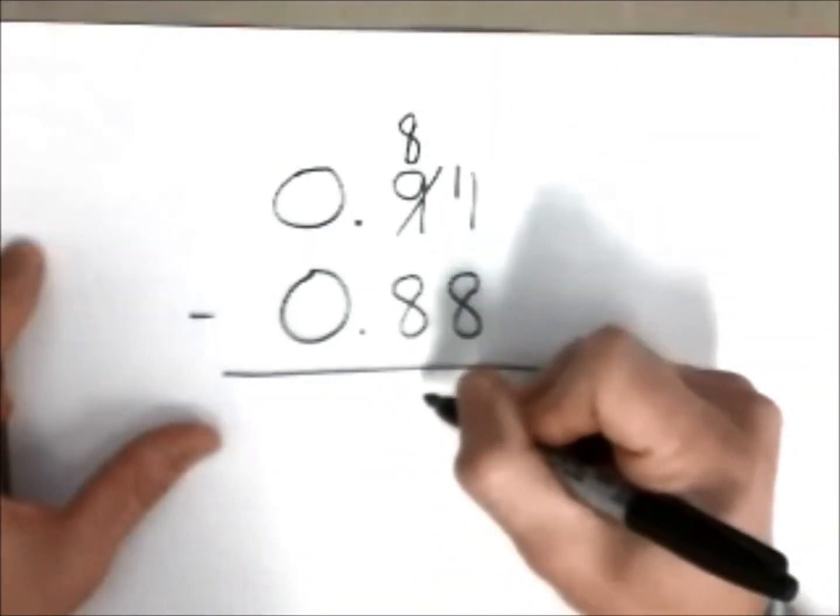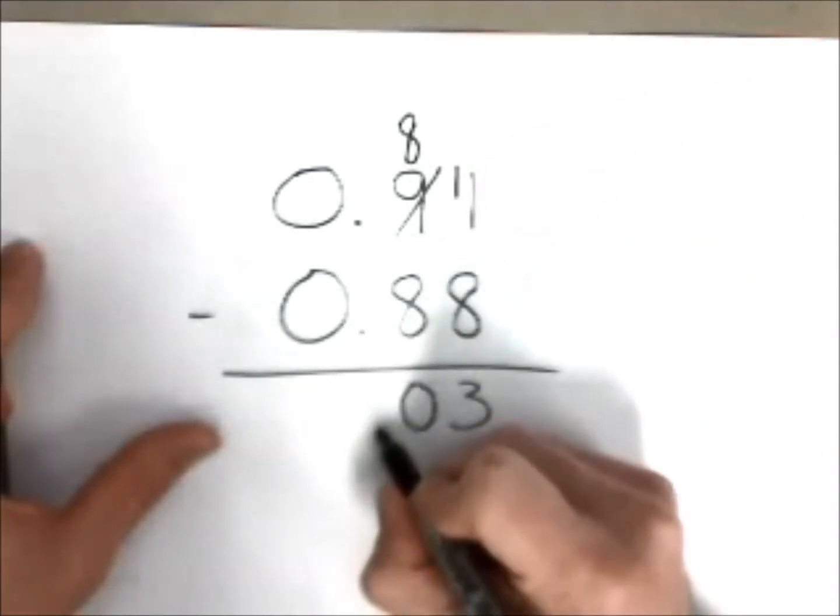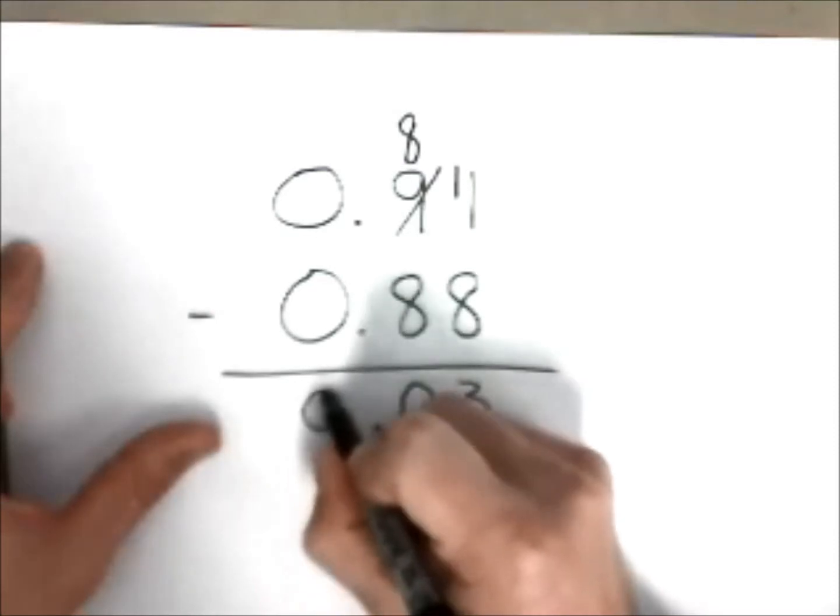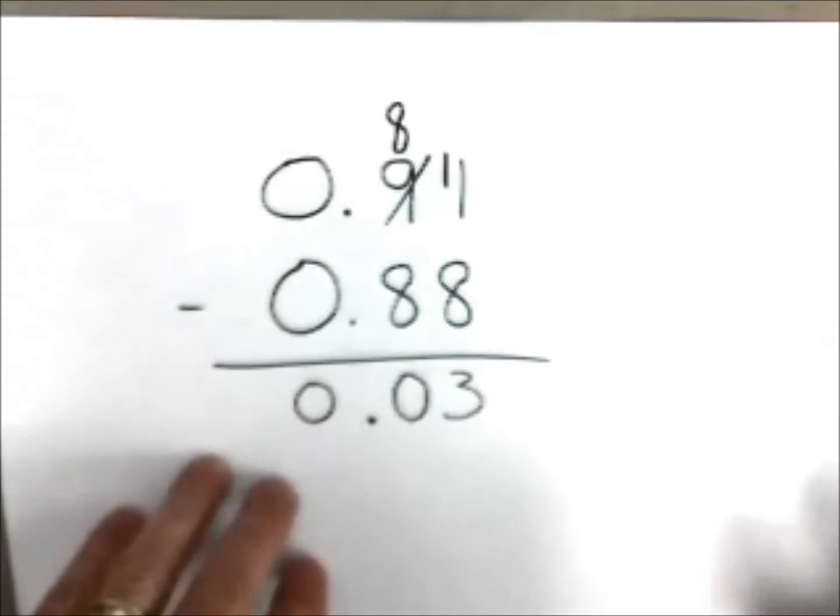Eight take away itself gives you zero, and you have to put that zero here to hold its place value. And this is going to fall down nice and neat. So you should have an answer of 3 hundredths. Very, very simple.